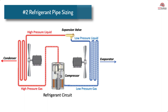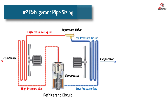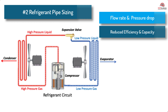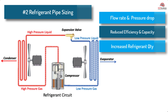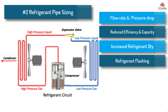2. Refrigerant pipe sizing. The diameter of the piping should be chosen based on the required refrigerant flow rate and pressure drop. The wrong size piping can cause excessive pressure drops, leading to reduced system efficiency and capacity while increasing power consumption. Liquid lines installed larger than required will increase the amount of refrigerant in the system, which could create additional problems. Undersizing liquid lines can cause the refrigerant to flash before it reaches the expansion valve, which will starve the evaporator and cause a loss in capacity and possible frosting up of the coil. If the suction line is oversized, there could be problems with the return of oil to the compressor, and if undersized, there can be a loss of capacity and an increase in superheat.